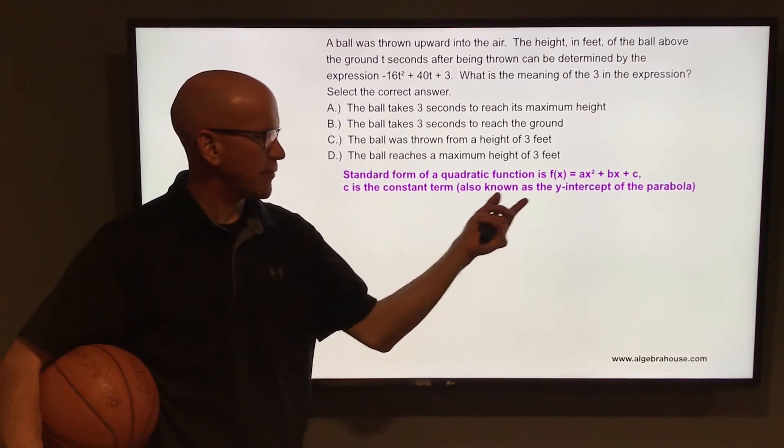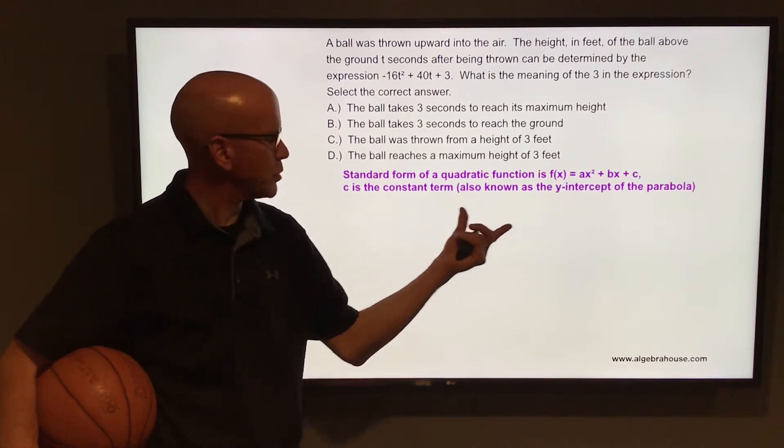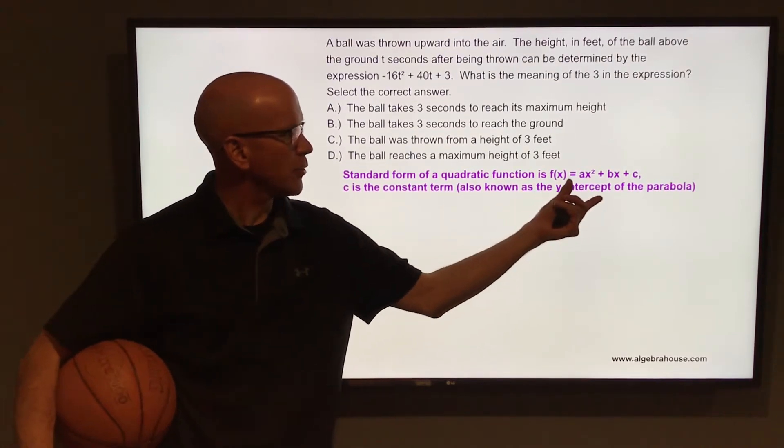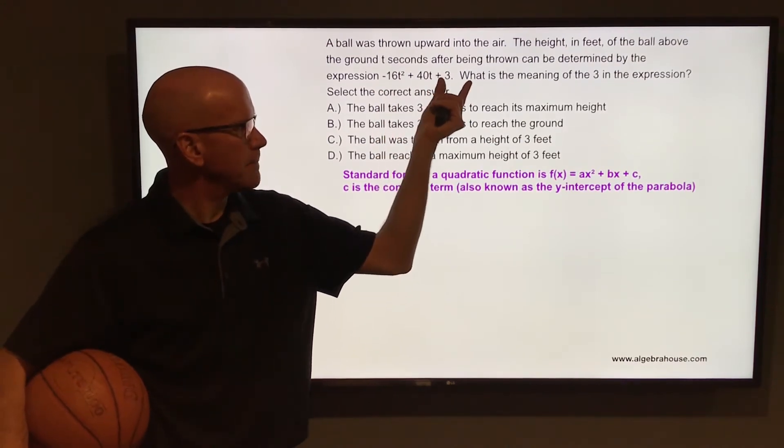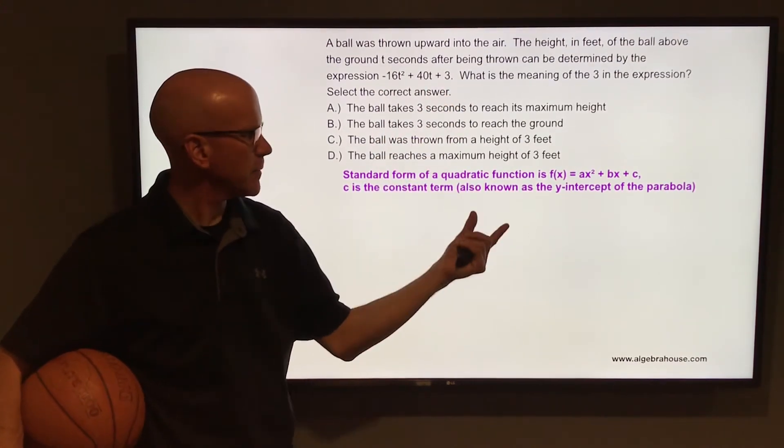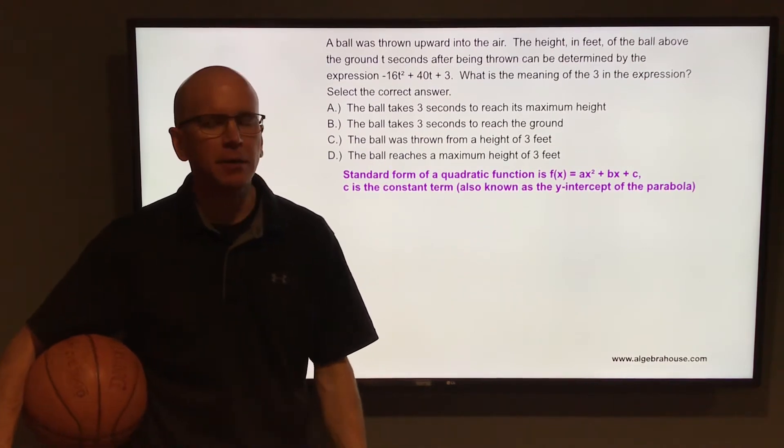The standard form of a quadratic function is f of x equals ax squared plus bx plus c, where that c is the constant term, the number without a variable, just like this negative 16t squared plus 40t plus 3. That 3 is the constant term. It's also known as the y-intercept of the parabola.